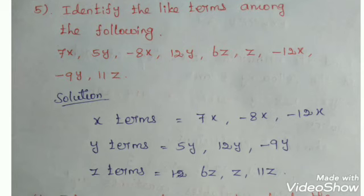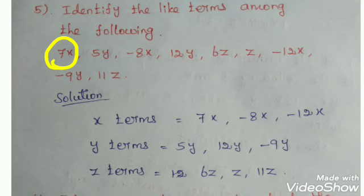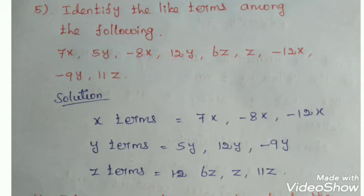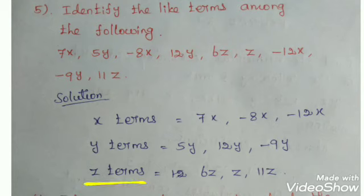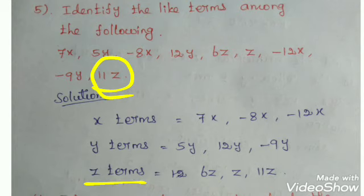Identify the like terms among the following: 7X, 5Y, minus 8X, 12Y, 6Z, Z, minus 2X, minus 9Y, 11Z. First, write the X terms: 7X, minus 8X, minus 12X. Next, Y terms: 5Y, 12Y, minus 9Y. Next, Z terms: 6Z, Z, and 11Z.